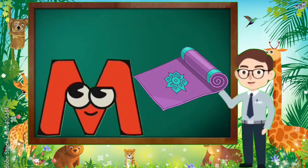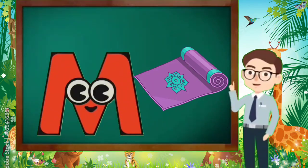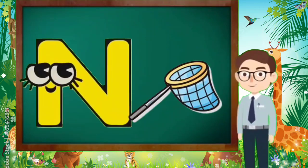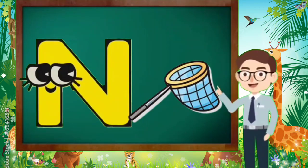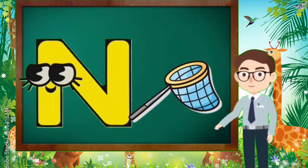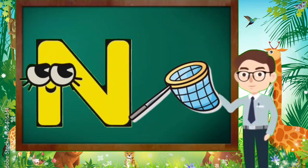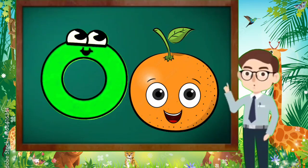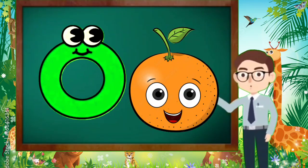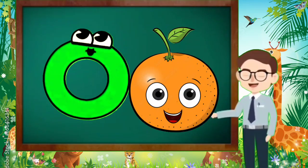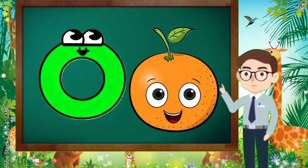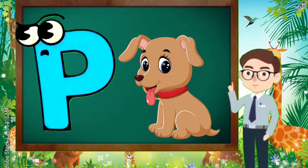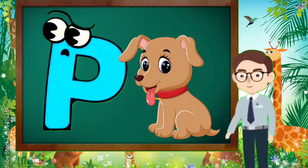M is for Mat, M-M-Mat. N is for Net, N-N-Net. O is for Orange, O-O-Orange. P is for Pet, P-P-Pet.